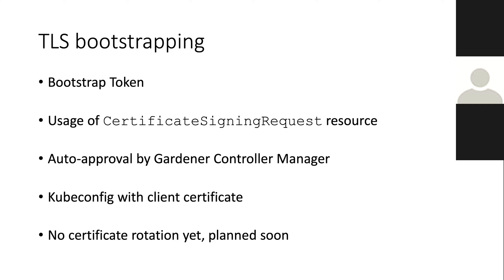The Gardenlet uses this bootstrap token to create a certificate signing request. The certificate request gets auto-approved by the Gardener controller manager when it sees it's coming from a Gardenlet. This leads to a client certificate that can be used to talk to the garden cluster — exactly the same process as for the kubelet. Certificate rotation hasn't been done yet but will be done shortly. These client certificates are valid for one year, so at least after a year a new one needs to be requested and the kubeconfig refreshed.